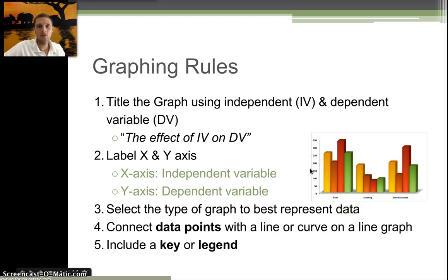Third, select the graph that's going to best represent the data. We're going to go through a couple different types of graphs here in just a second. Fourth, connect data points with a line or curve on a line graph. Google actually does that for you automatically. The last part is to include a key or legend, especially with bar graphs when you have multiple different types. For example, in this graph right here there's multiple different colors of these bars, so this graph would need a key or legend that shows what those colors represent.